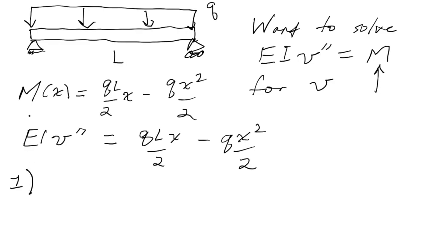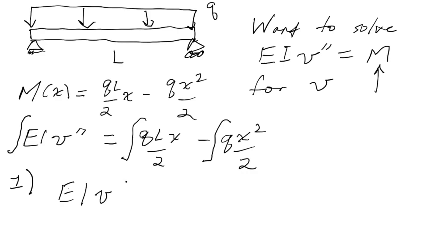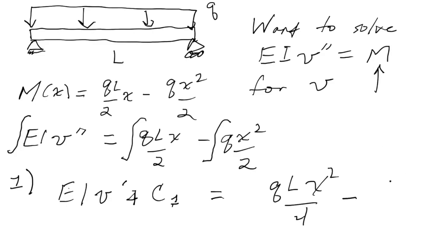In order to compute v we integrate two times. For the first integration, we take both sides and integrate. The left side gives EI v' plus a constant of integration C1, and the right side gives qLx²/4 minus qx³/6.